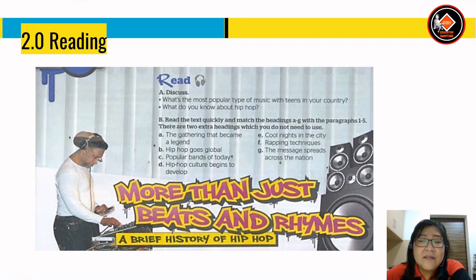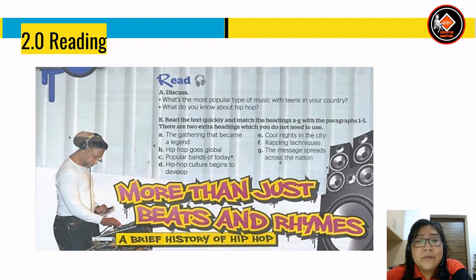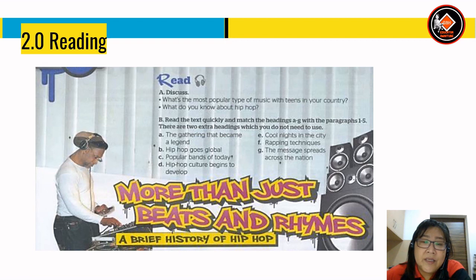Now let's look at our lesson. For reading, first discuss with your partners: what is the most popular type of music with teens in your country? Second, what do you know about hip-hop? For part B, read the text quickly and match the headings A through G with paragraphs one through five. There are two extra headings you do not need to use. The title is 'More Than Just Beats and Rhymes: A Brief History of Hip-Hop'.